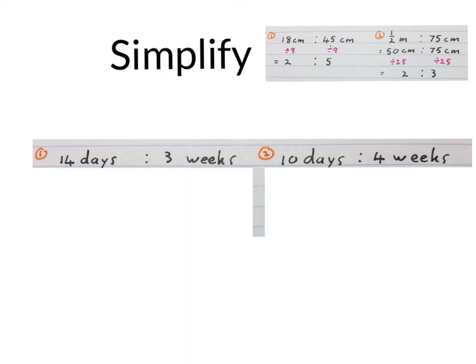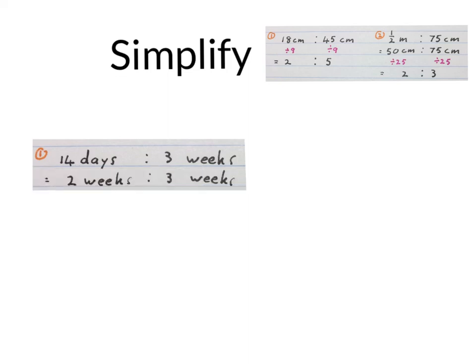The last two sets of ratios involve ratios with time. First we have 14 days to 3 weeks. A possible way of doing it is to convert both of them to weeks. We convert them to the same units. 14 days to 3 weeks. The simplified ratio is 2 to 3.